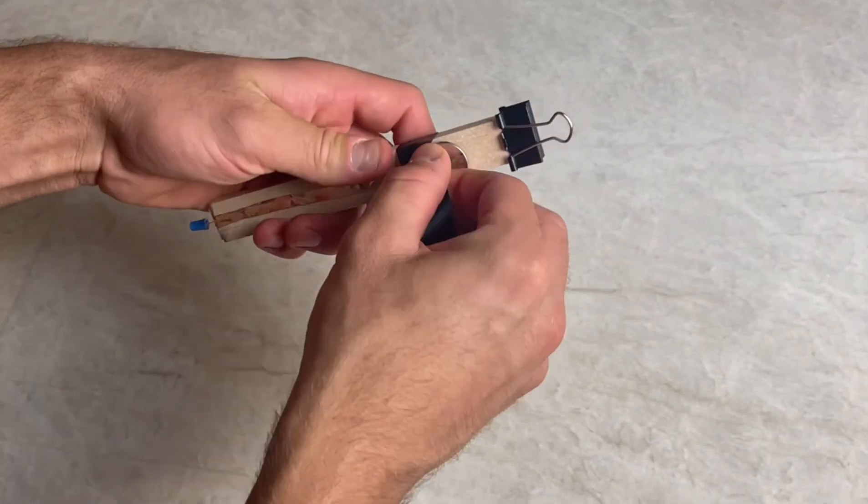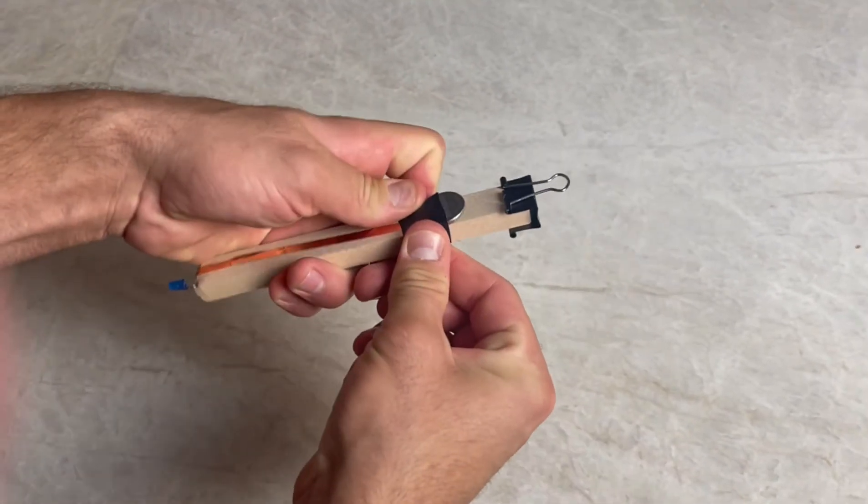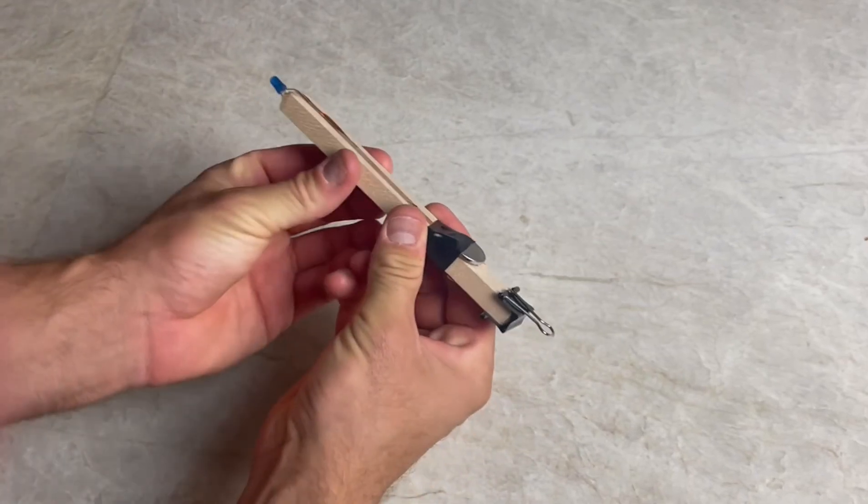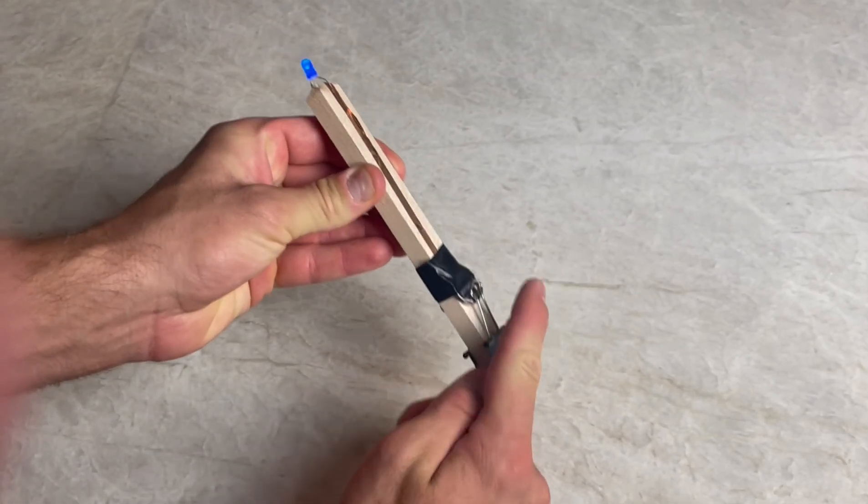When you are taping though, try to stay towards the top of that battery so when the hammer from the binder clip comes down it doesn't go on top of the tape. That's actually going to give the electrons a different path to flow through and they won't flow through our circuit so it won't work.